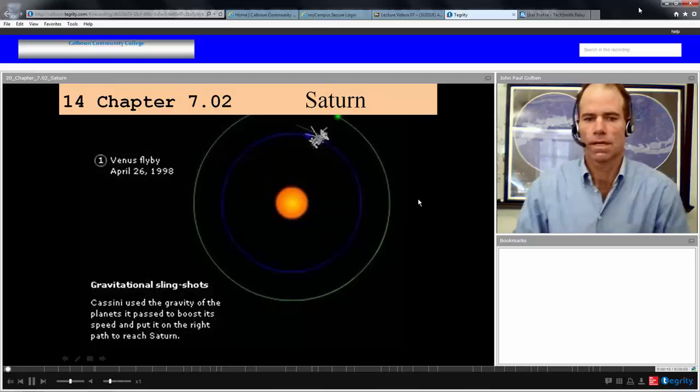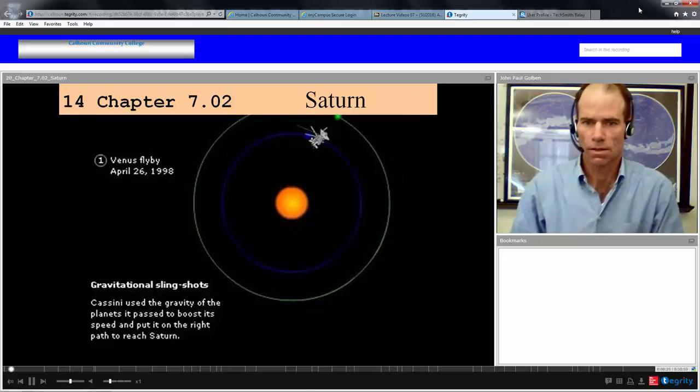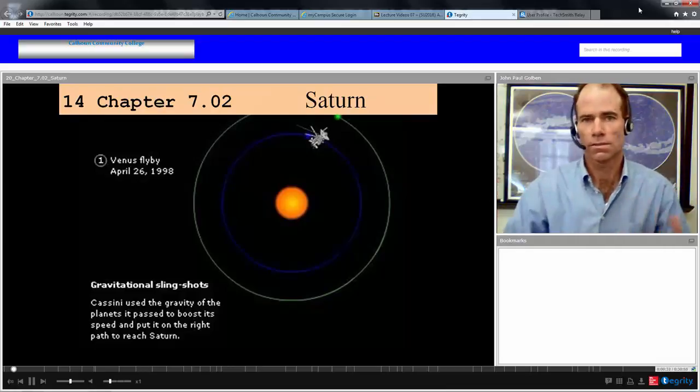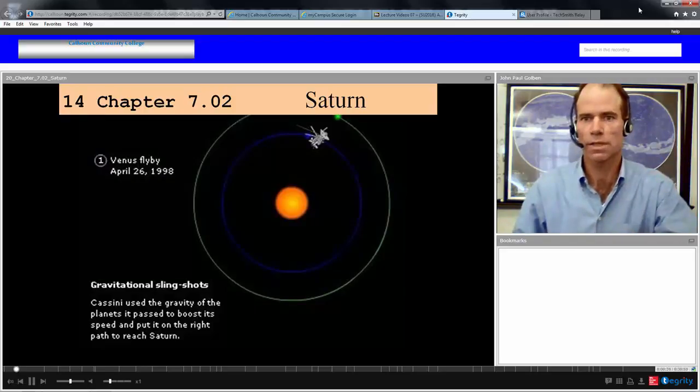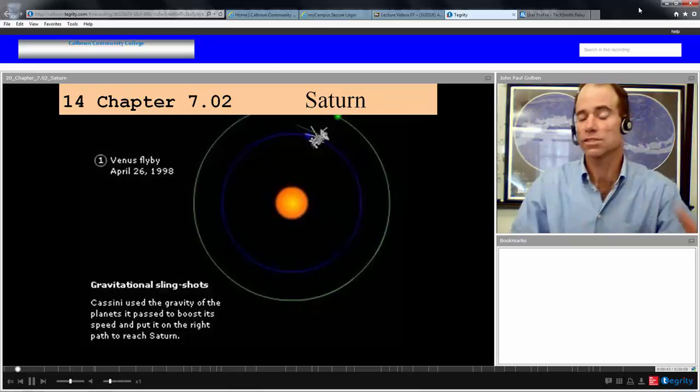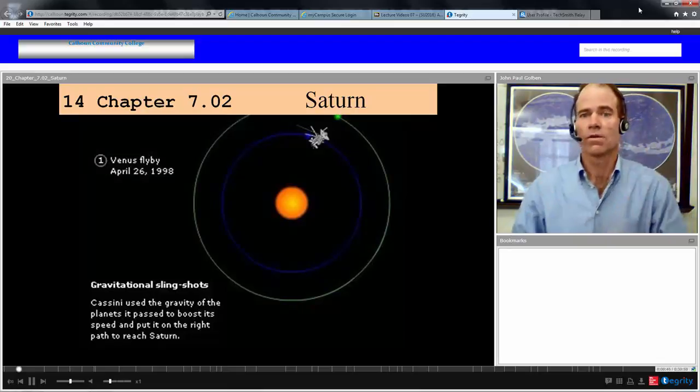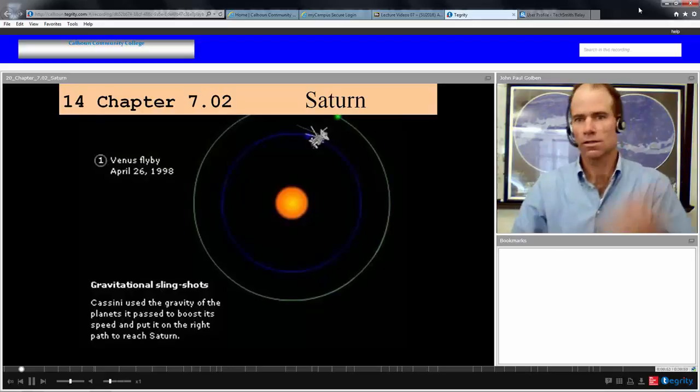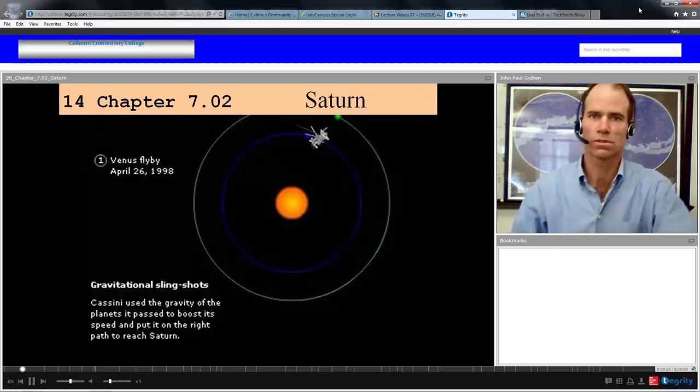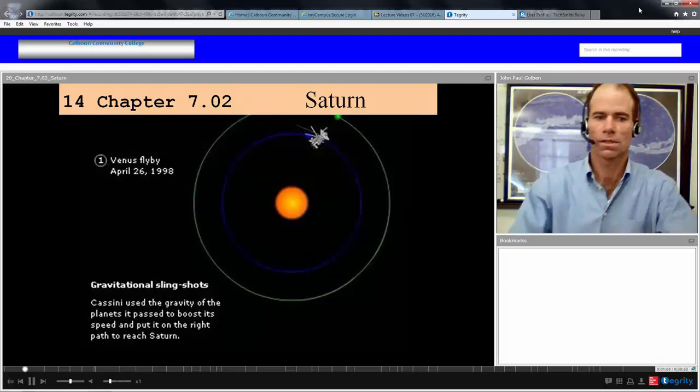To get to Saturn requires gravitational slingshotting. The Cassini orbiter was propelled towards Venus to steal some of Venus's momentum as it's going around the sun and pick up greater speed. So rather than shooting at Saturn, we shoot at Venus, pick up momentum, come back to Earth, pick up Earth's momentum, go back to Venus, and then project out towards Jupiter, get a gravity boost, and then go to Saturn.